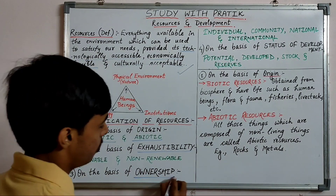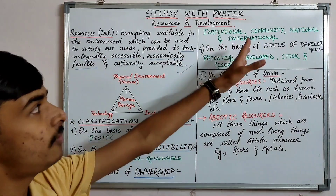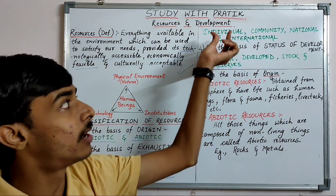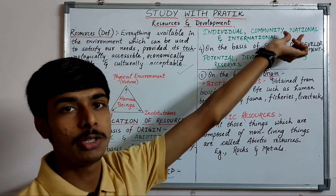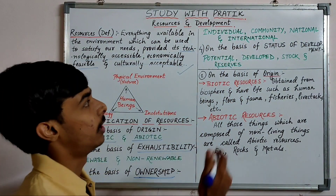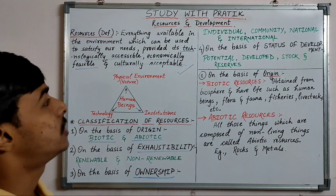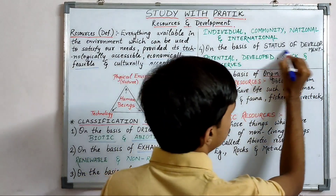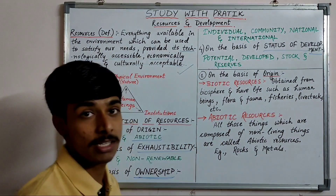On the basis of ownership, resources are divided into individual, community, national, and international levels. The fourth and final classification basis is status of development — 'vikas ke aadhaar par' — how developed a resource is. Under this we have potential resources, developed resources, stock, and reserves.